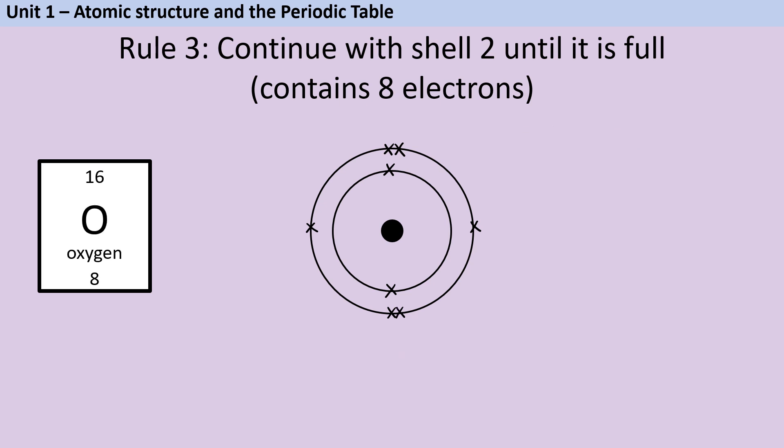Then oxygen with eight electrons in total has two in the first shell and six in the second, so of course it's in group six.